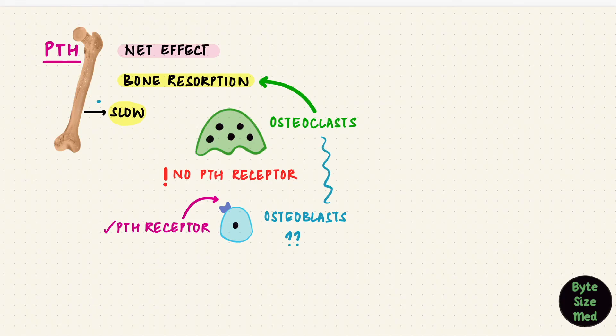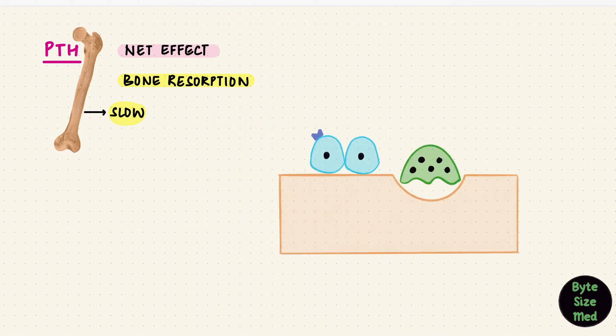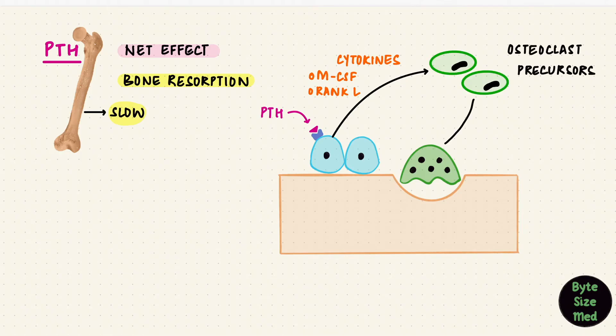Osteoblasts regulate osteoclasts. When PTH binds to its receptor on the osteoblast, there's the release of cytokines, like macrophage colony stimulating factor, the RANK ligand. What do these cytokines do? They act on osteoclast precursor cells and convert them to active osteoclasts.